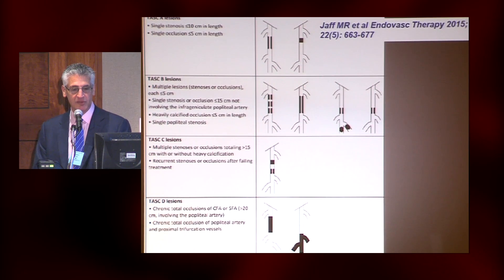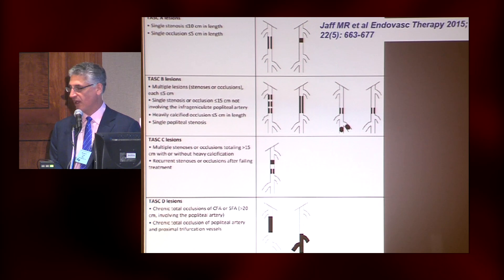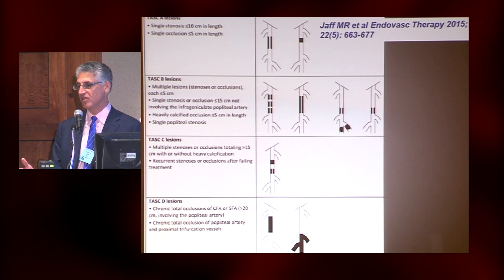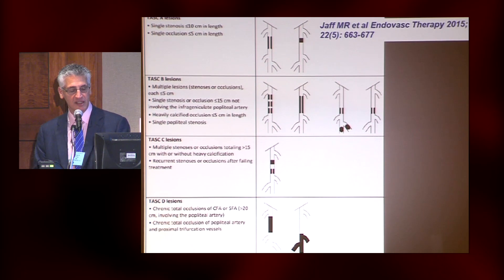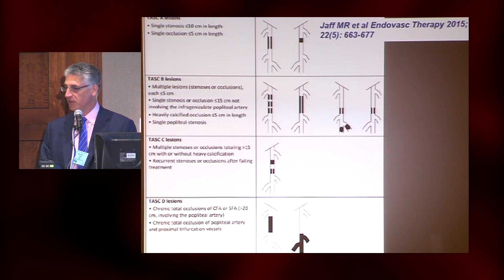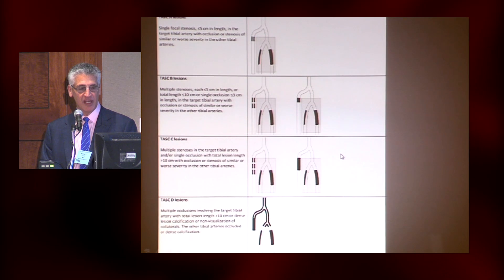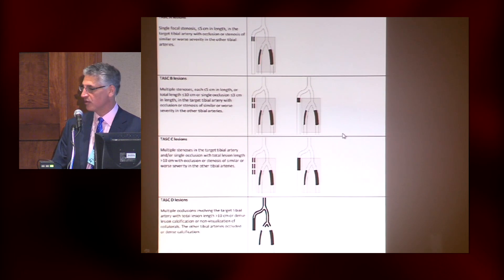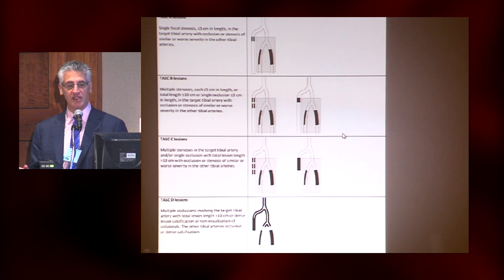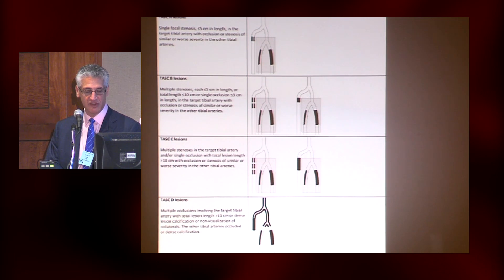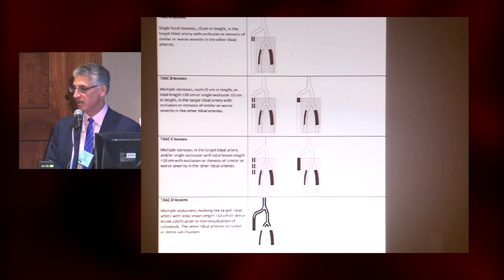This is the latest update on the TASC system — they've added a tibial-level system, but haven't changed very much. It's still a segment-by-segment approach, so it's really hard to know what that means when you have multilevel disease. They didn't change the above-knee system, and they've added a system for tibial disease. But again, the recommendation is that it doesn't really allow clinical decision-making. It's probably most useful for comparing how two devices may work in the same lesion, but not really for treatment strategies.